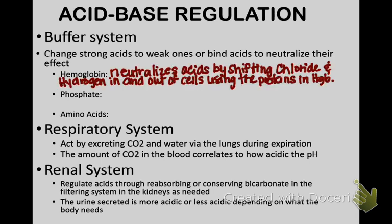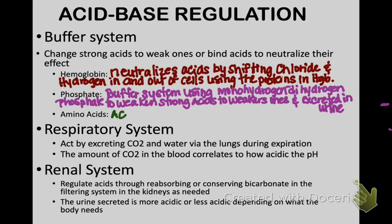To review acid-base regulation: your body has a natural buffer system that changes strong acids to weak ones or binds acids to neutralize their effect. Those buffers react immediately — your hemoglobin, phosphate, and amino acids. Hemoglobin neutralizes acids by shifting chloride and hydrogen in and out of the cells. Your phosphate buffer system uses monohydrogen and dihydrogen phosphate to weaken strong acids and excrete them in the urine. Amino acids act similar to bicarb.